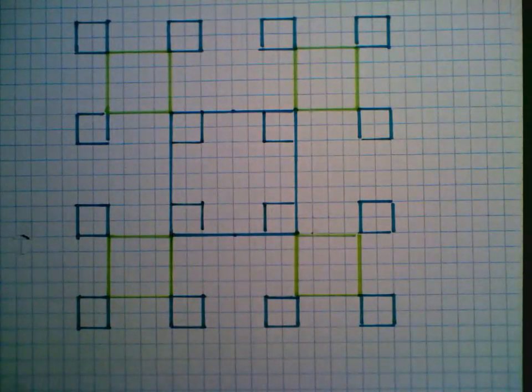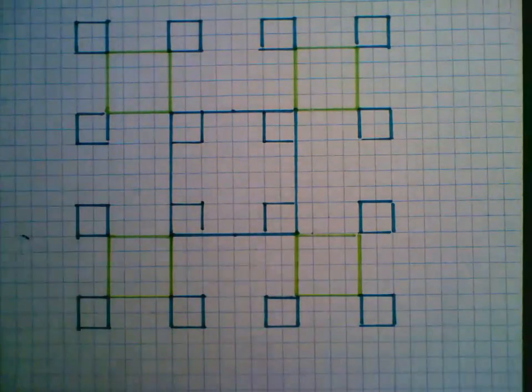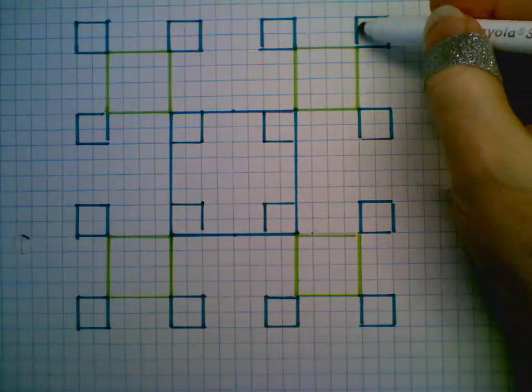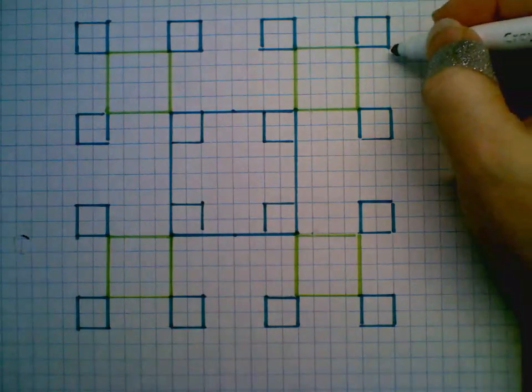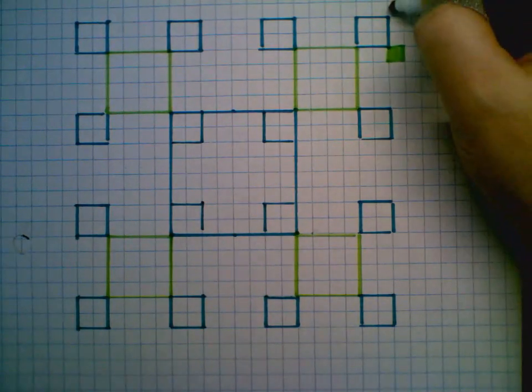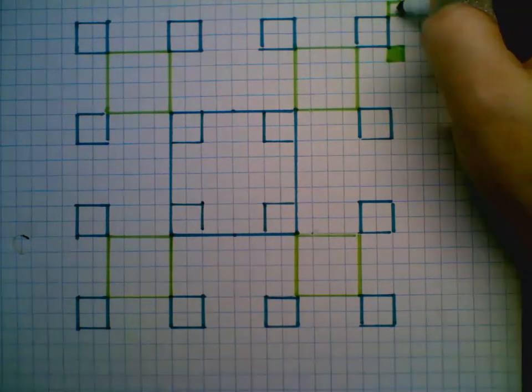Okay, and I'm going to add one more layer to this. So now each of these blues is a two by two, and I'm going to add a one by one on each corner, off of each vertex.